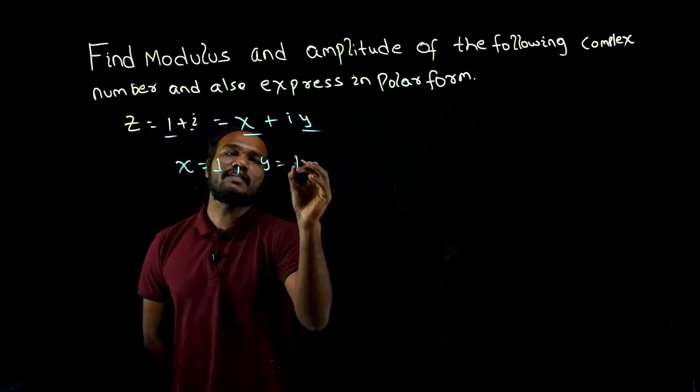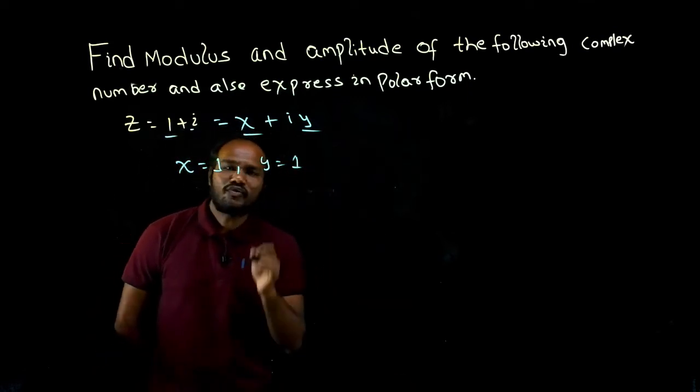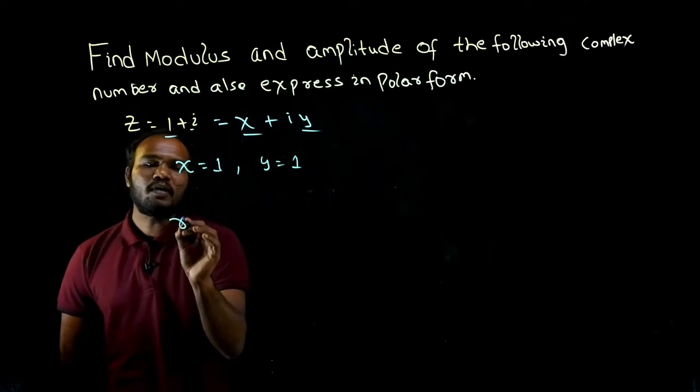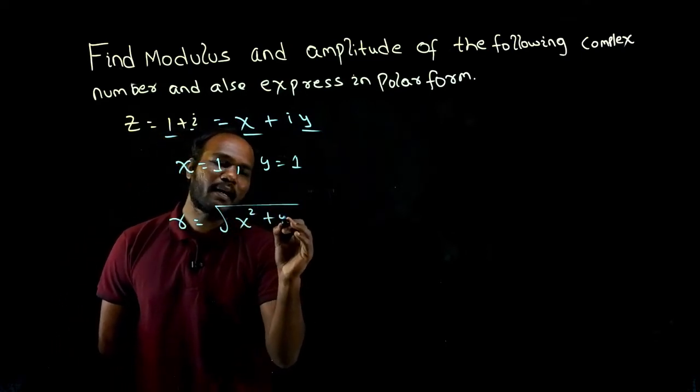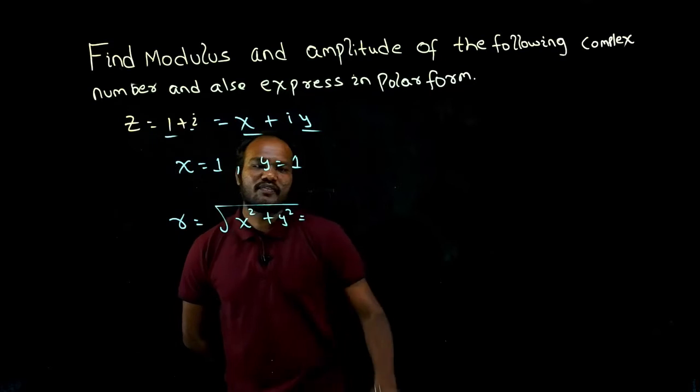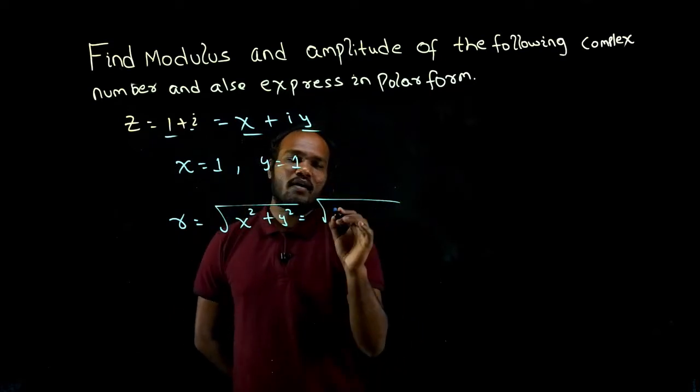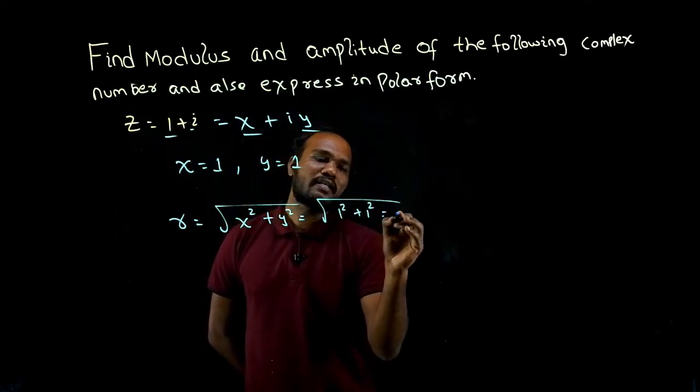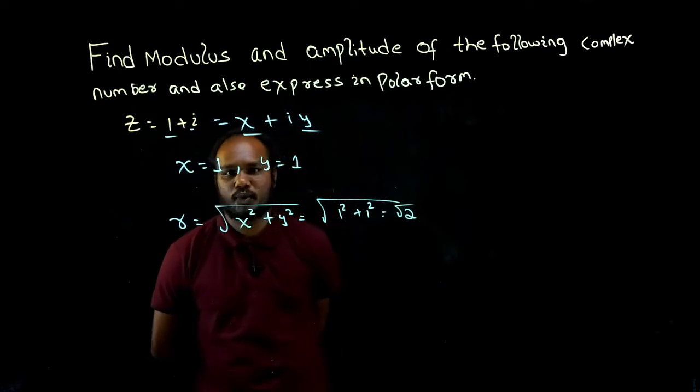To find modulus, we need to know the formula. That is r equals root of x squared plus y squared. So if I just substitute that, root of 1 squared plus 1 squared, that is nothing but root 2.